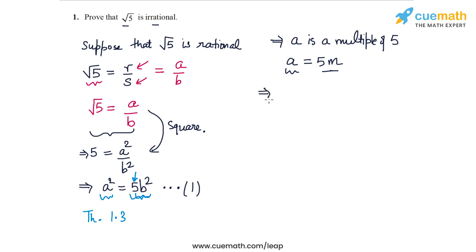5 m square whole square equal to 5 b square. And let me square this. So I get 25 m square equal to 5 b square. And let's cancel out a factor of 5 on both sides. And then I can write this as b square equal to 5 m square.